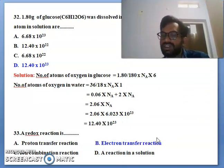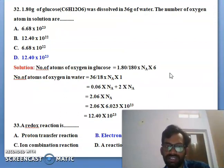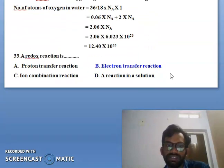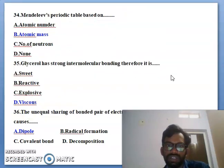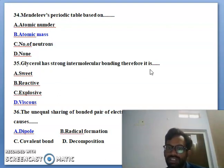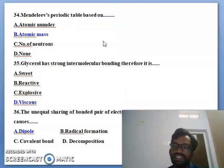A redox reaction means the electron transfer reaction. Simple answer is the electron transfer reactions all are redox reactions. You can see here next one 39, 34, the Mendeleev periodic table based on the atomic mass. The glycerol has strongest intermolecular bonding therefore it is more viscous. You can see that 36th: the equal sharing of bonded pair electrons between two atoms molecules is caused the dipole moment. Because of the dipole moment they will show the equal number of electrons, sharing electrons.